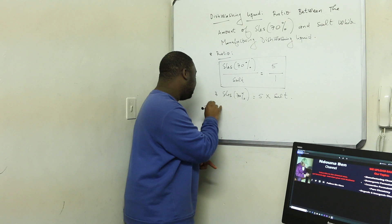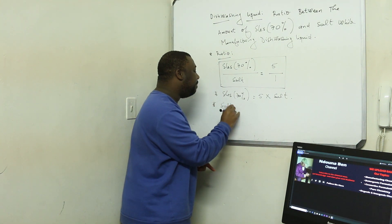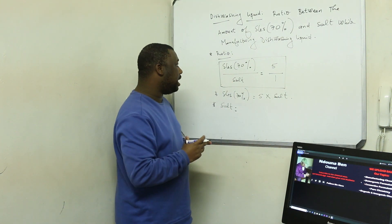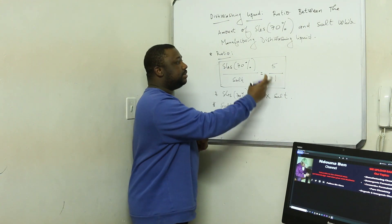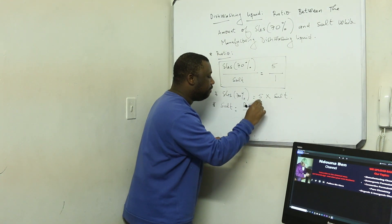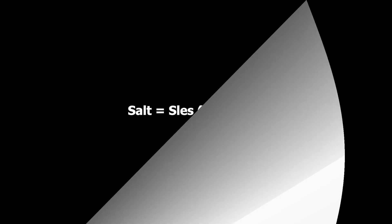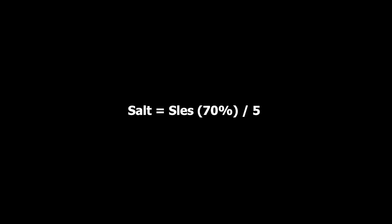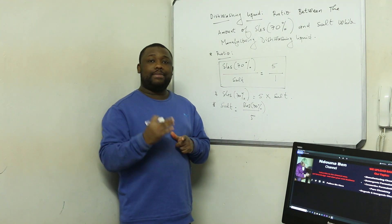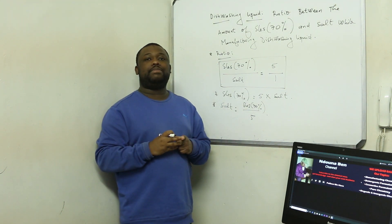Or let's say if now you have to find the amount of salt knowing the amount of SLES. You make it the subject of the formula. From here, what do you get? It will be SLES times one divided by five. So it means, knowing the amount of SLES, if you want to find the amount of salt, you have to divide the amount of SLES by five. Now let us get to our illustration, whereby I'm going to give you three different cases.